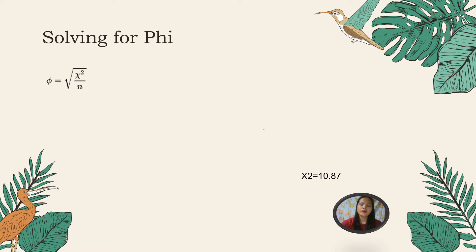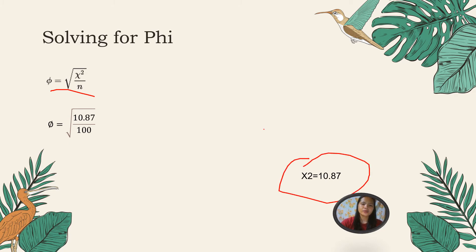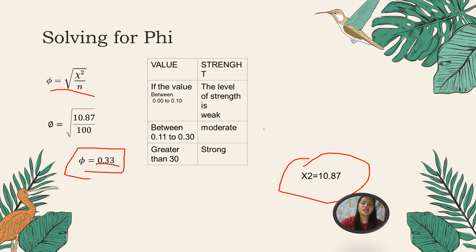Solving for phi: after obtaining the chi-square of 10.87, we apply the formula — phi equals the square root of chi-square divided by n. So phi equals the square root of 10.87 divided by 100, giving phi equals 0.33. Since 0.33 is greater than 0.30, it means our variables have a strong relationship.